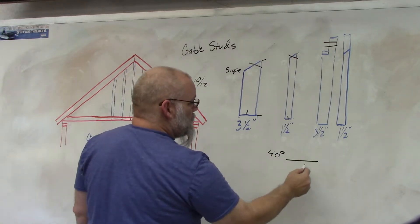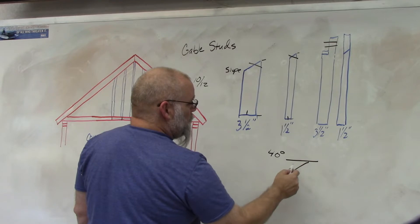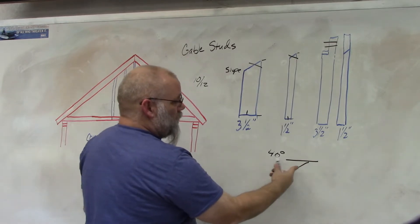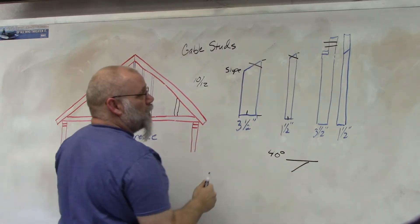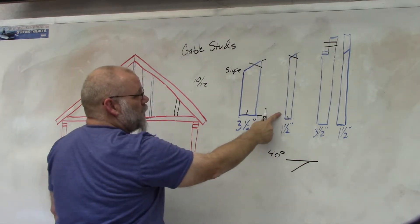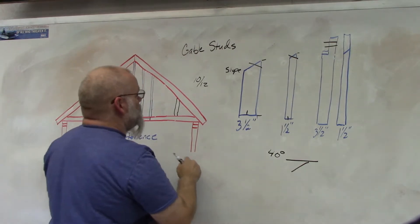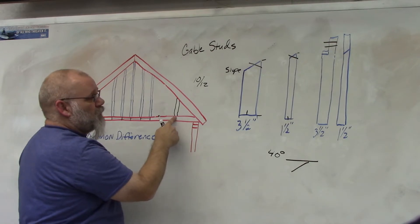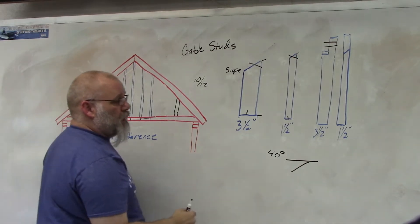So then you would set your saw blade at 40 degrees to cut that bevel on the end of this board right here. And it would fit in there the same way as this one would except it's only inch and a half compared to the three and a half.